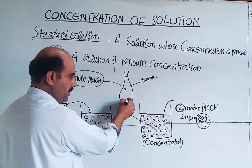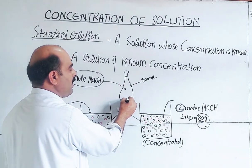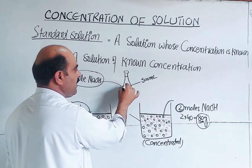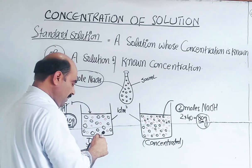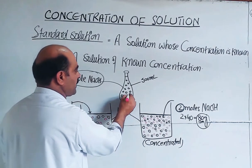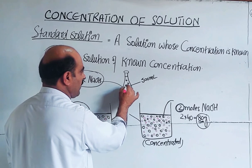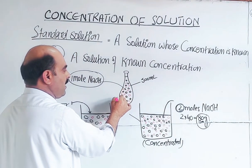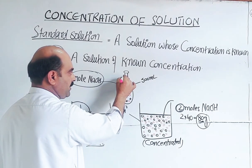Water is added to dissolve the sodium hydroxide, which ionizes into sodium ions and hydroxide ions. More water is then added until the total volume fills the flask up to the mark.